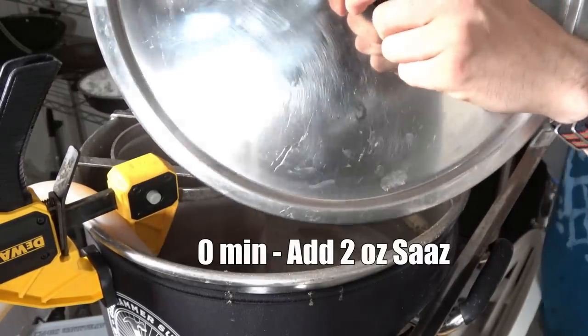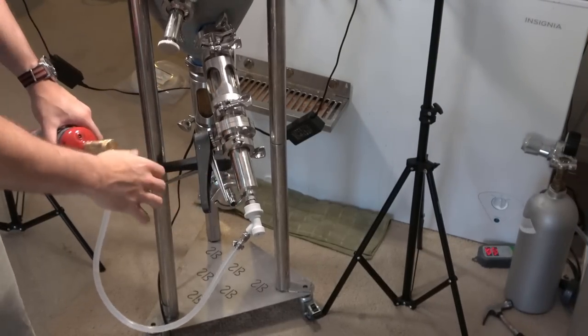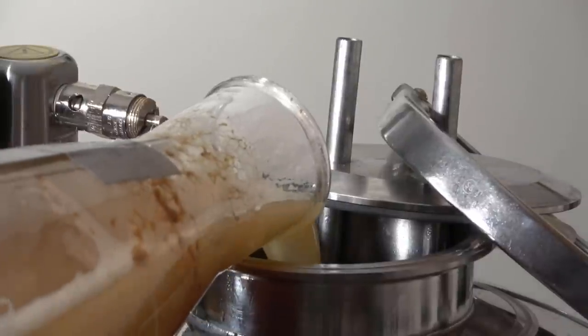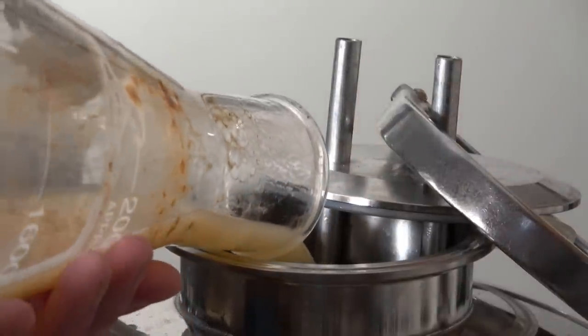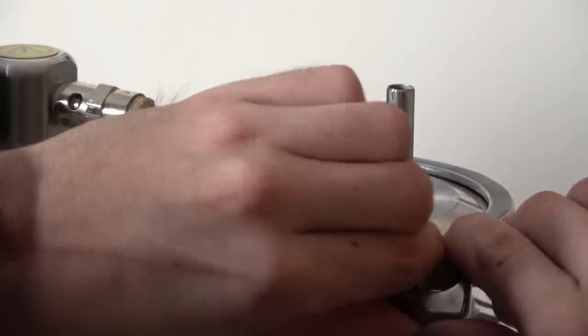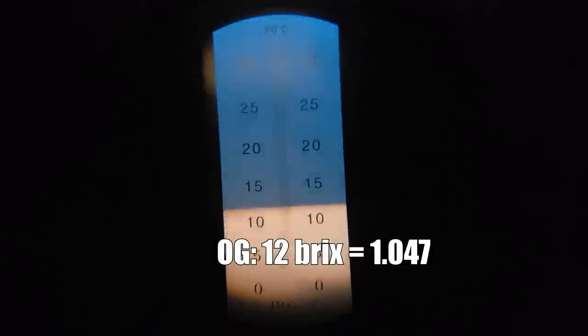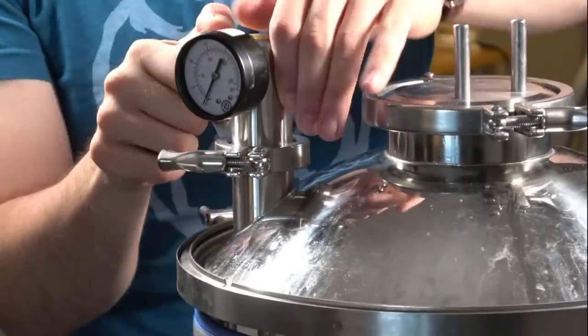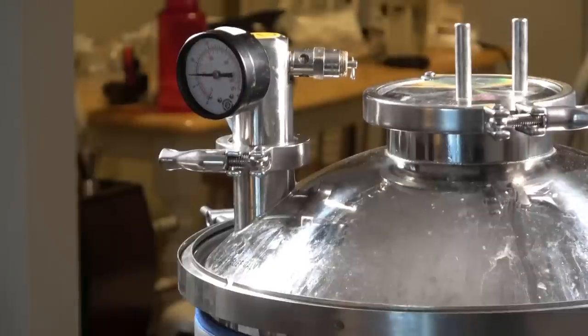Once the boil ended, I added my zero-minute hop addition, two more ounces of Saaz, and I began chilling. I let the wort chill to about 70 Fahrenheit, and I aerated the wort with pure O2, with a dose of about one minute at full blast. At this point, I pitched the yeast. I took an OG sample, and I recorded an original gravity of about 12 brix, or 1.047, which was about five points short of my target OG, but still plenty sufficient for this beer. Lastly, ensuring I had a proper pressure relief valve installed, I applied about 15 psi of pressure to the fermenter, and then I let it sit and left it to ferment.